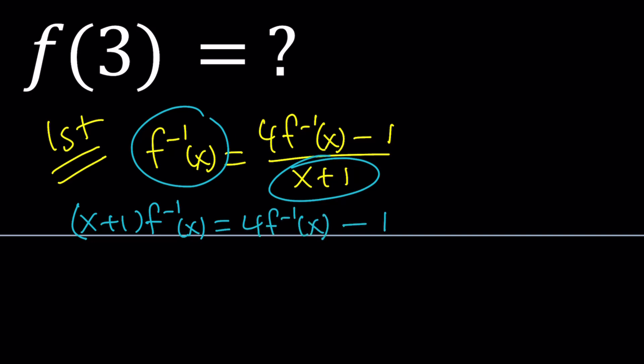And then we can go ahead and put this on the right hand side and put the negative one on the left hand side. So it's going to be 1 equals 4 f inverse of x minus x plus 1 f inverse of x. And then we can factor out f inverse.